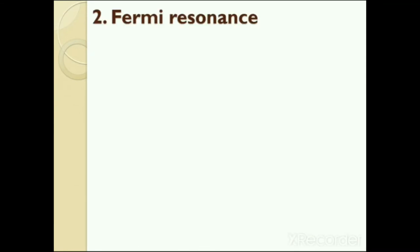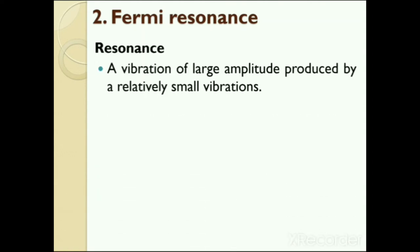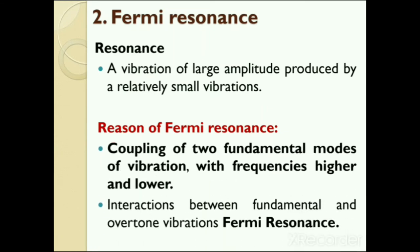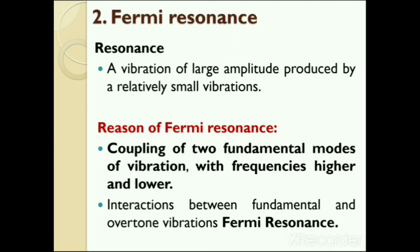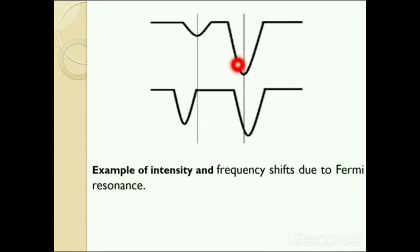The second factor which affects vibrational frequency is Fermi resonance. In some cases, due to resonance, a vibration of large amplitude is produced by relatively small vibrations — coupling of two fundamental modes with frequencies higher and lower than that observed in the absence of interaction. Interactions can also take place between fundamental vibrations and overtone or combination tone vibrations; such interactions are known as Fermi resonance. The lowest allowed natural frequency of vibration is the fundamental vibration, while higher allowed frequencies above the fundamentals are called overtones.